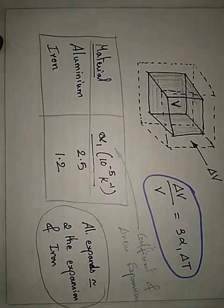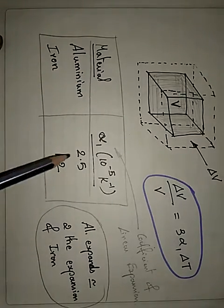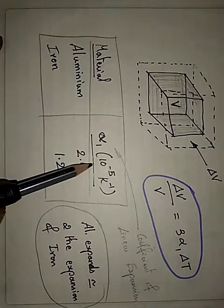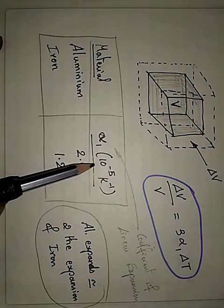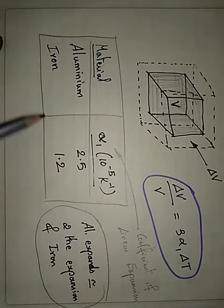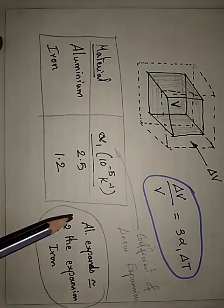For example, if we consider two materials, say aluminum and iron, the alpha 1. Alpha 1 means coefficient of linear expansion, which is, for aluminum, it is 2.5 into 10 power minus 5 per Kelvin. For iron, it is 1.2 into 10 power minus 5 per Kelvin.